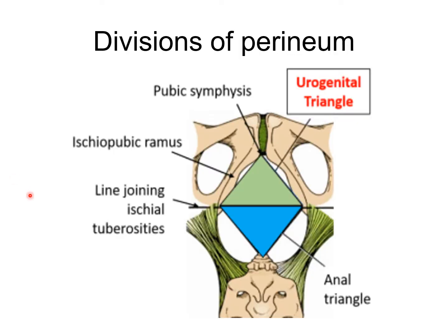The deep boundaries of the perineum are similar to that of the pelvic outlet. Anteriorly, it is bounded by the lower border of the symphysis pubis; anterolaterally by the ischiopubic ramus; laterally by the ischial tuberosities; posterolaterally by the sacrotuberous ligament; and posteriorly by the tip of the coccyx. This diamond-shaped perineum is divided into two triangles by an imaginary line joining the two ischial tuberosities — the anterior urogenital triangle and the posterior anal triangle.